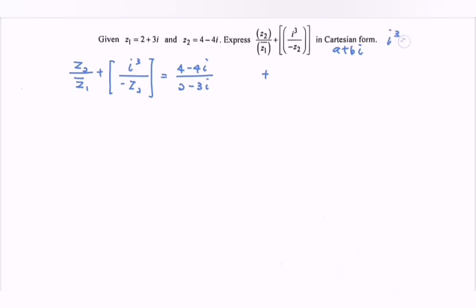As we all know, i³ actually equals i multiplied by i². The i² will be negative 1. So here we have negative i over negative (4 - 4i).